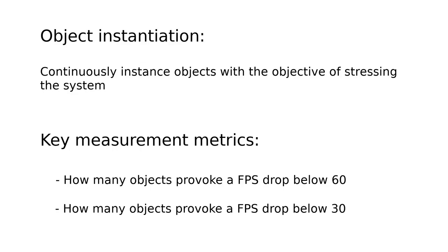I will use the exact same samples I showed in the last video. I have adapted them to be built for WebGL, so I will perform again an object instantiation test, which means to instantiate objects and see how the engine performs as the number of elements is increasing. For the 3D tests I'm going to drop cubes on a plane, and for the 2D tests I'm going to drop little balls in a box. The relevant key performance indicators will be when the framerate drops below 60 and when it drops below 30.